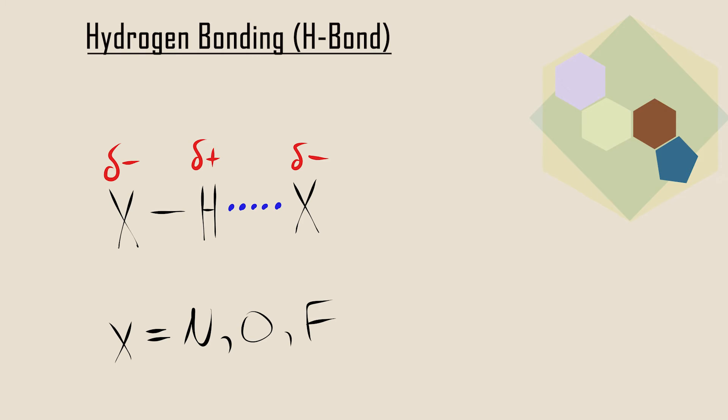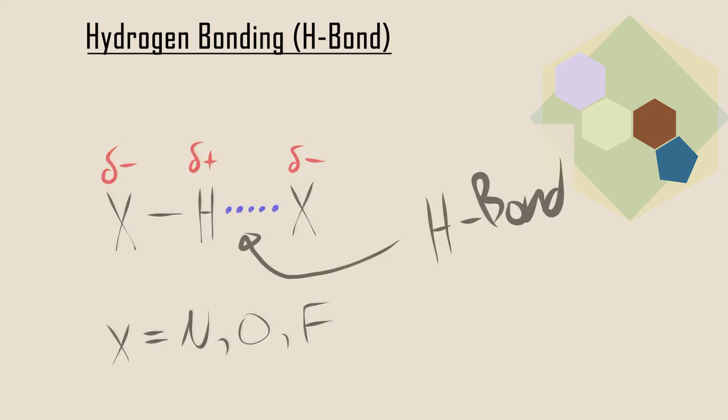and F are essential to hydrogen bonding for the following reasons. The small size and high electronegativity of these atoms results in their covalently bonded H atom becoming highly positive. It allows the lone pair of the other N, O, or F to come close to the H, resulting in a short, strong intermolecular attraction.